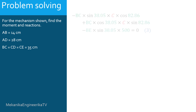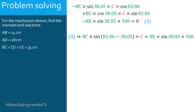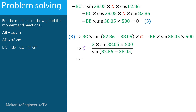Focusing on equation 3, it can be simplified as: BC·sin(82.86 minus 38.05)·C equals BC·sin(38.05)·500. Thus C equals 2·sin(38.05)·500 divided by sin(82.86 minus 38.05). Using a calculator gives C approximately equal to 874.55 N.